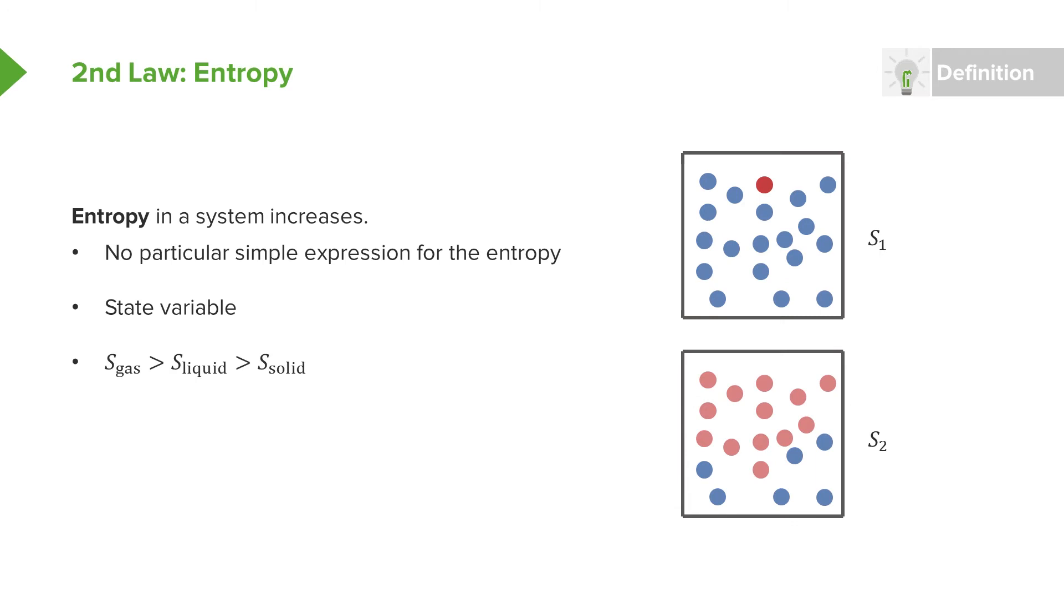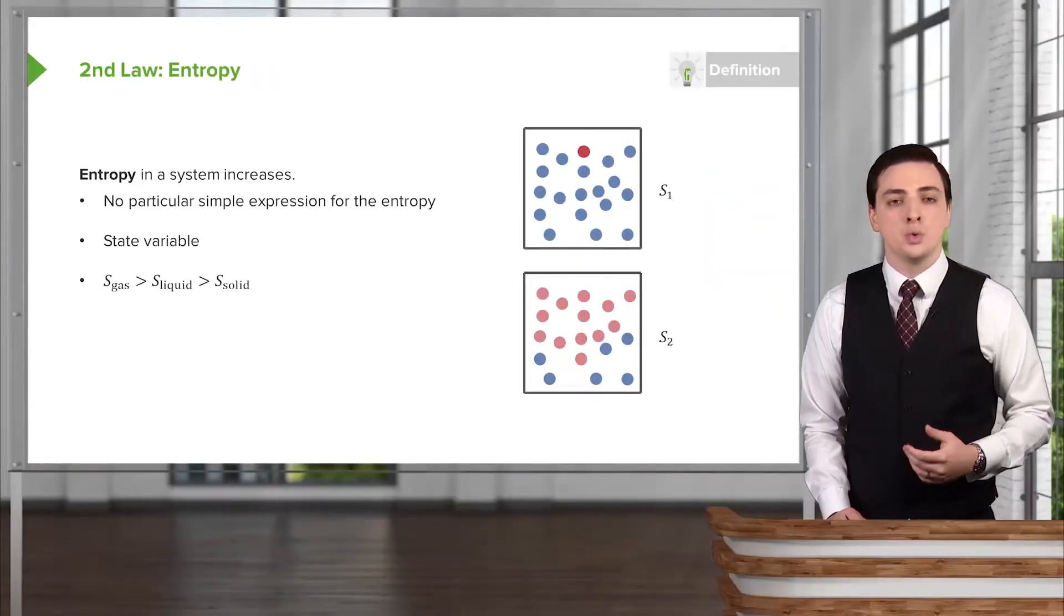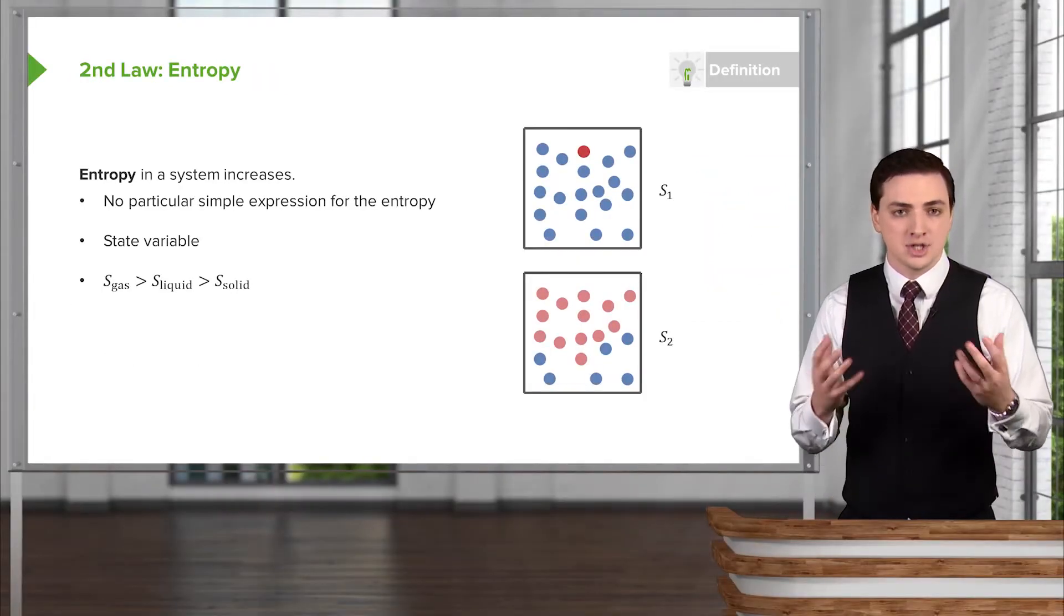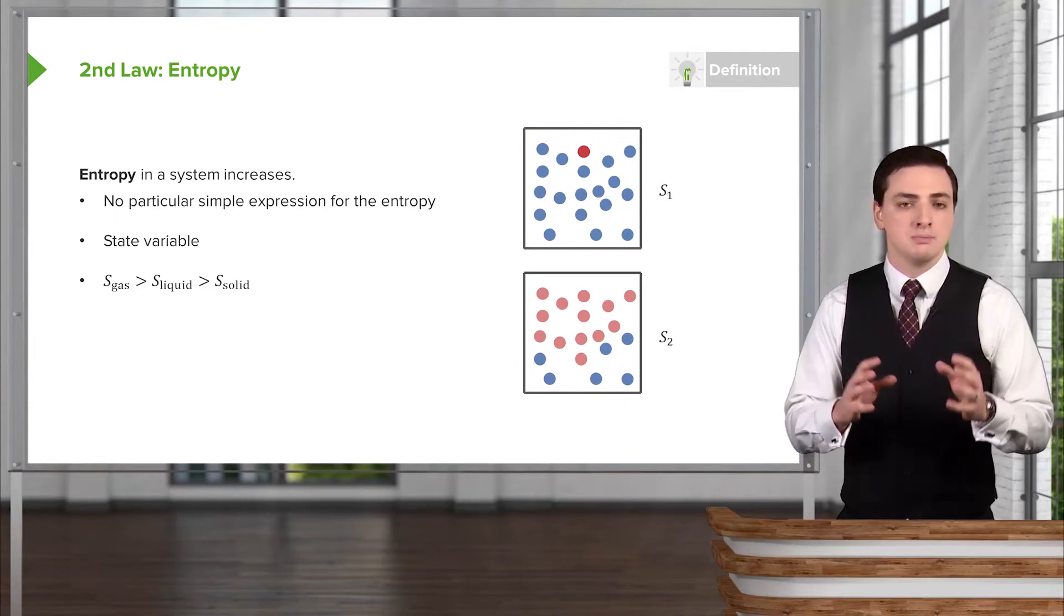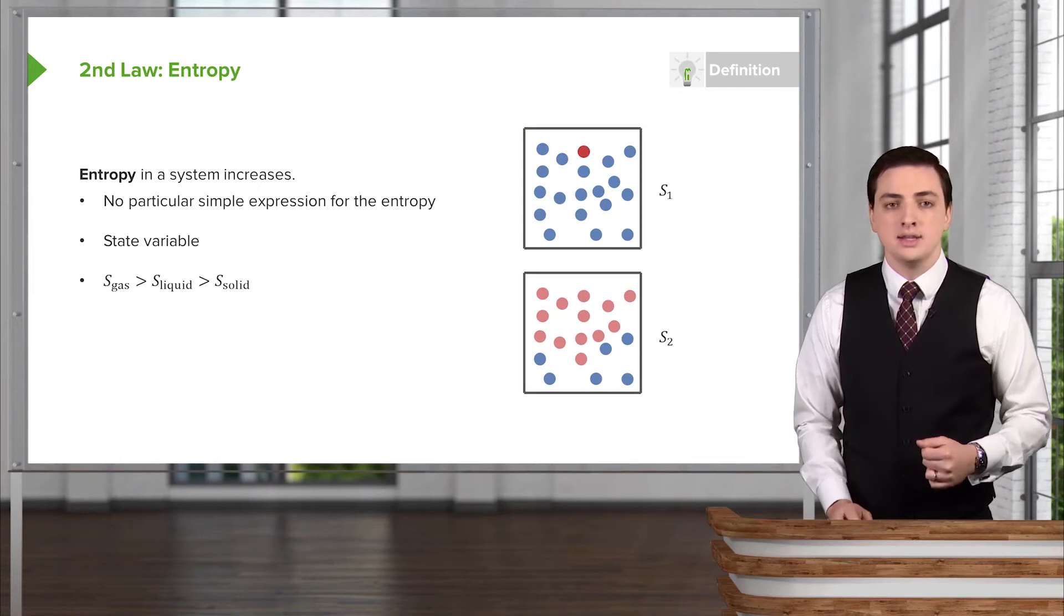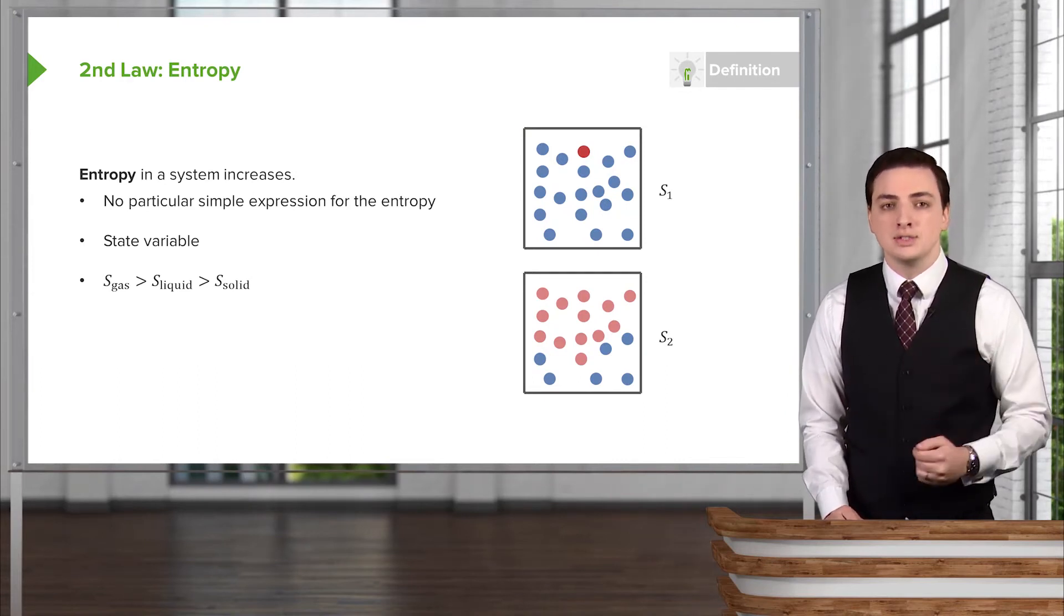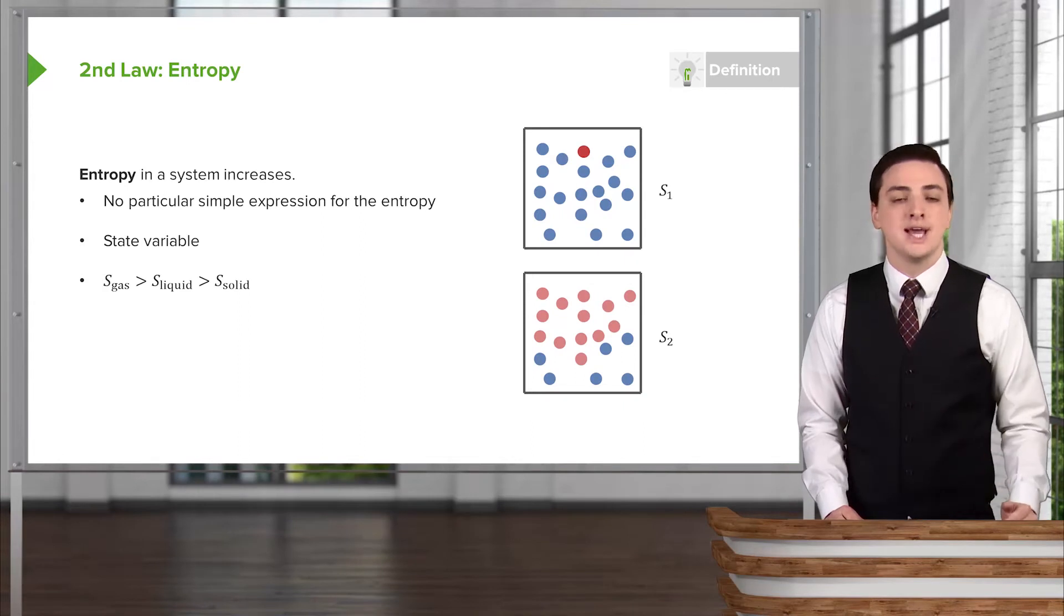We also have that the disorder for systems, or the entropy of systems, is going to be greater for gases and for liquids than it is for solids. And the entropy of a gas is also greater than the entropy of a liquid. This follows our intuition quite well. We would think of a gaseous state where all these particles are bouncing around in the air as being a lot more disordered or chaotic than we would consider a simple solid, which is very immutable relative to that great motion of particles in a gaseous system.